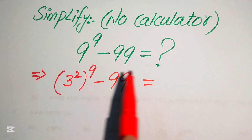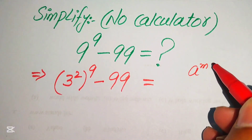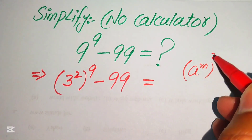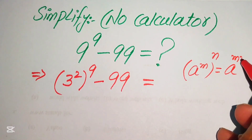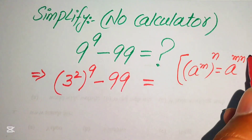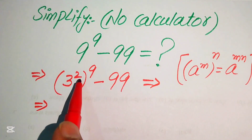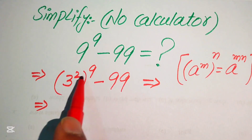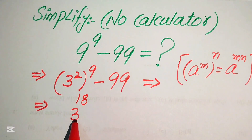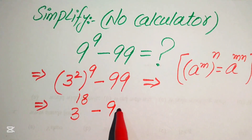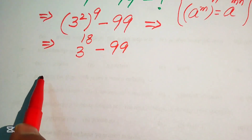We apply the exponential formula: if you have a to the power of m, to the power of n, it equals a to the power of m multiplied by n. According to this exponent law, we multiply the two exponents: 2 times 9 becomes 18, giving us 3 to the power of 18, minus 99.